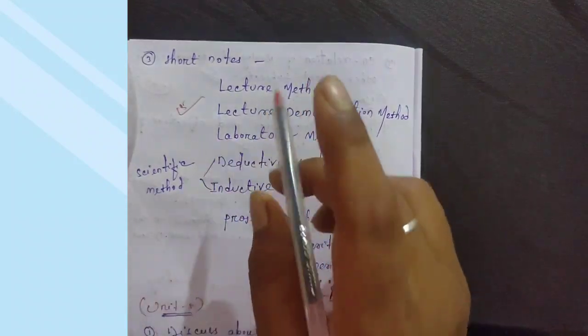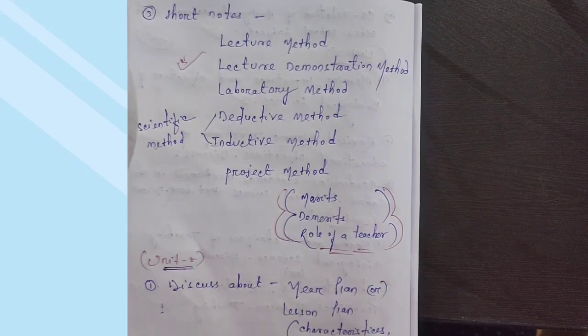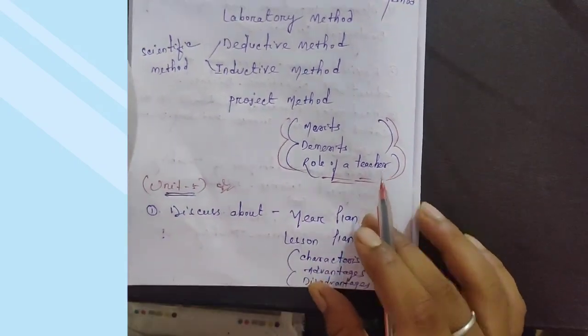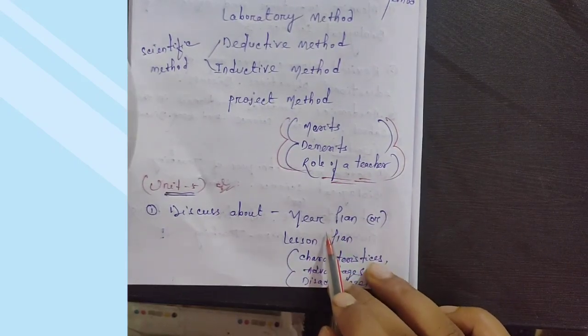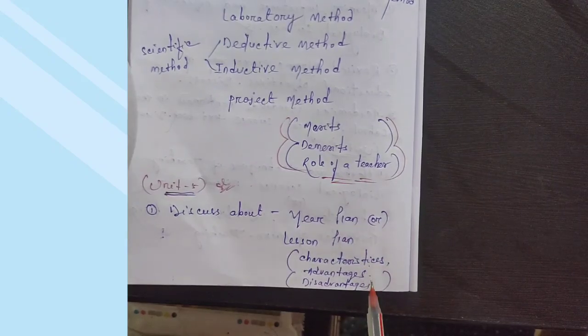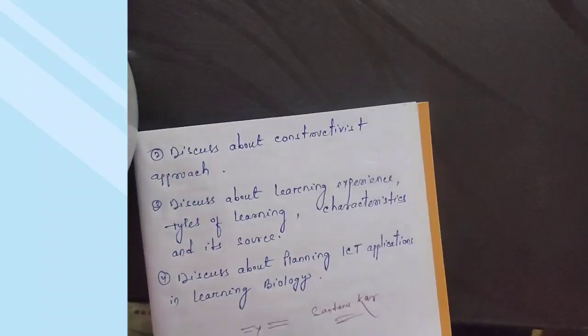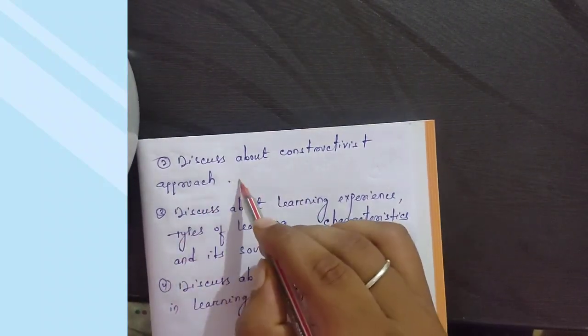Unit 5: Discuss different approaches - these are short notes. Year plan and lesson plan are important - focus on these. Long questions include characteristics with advantages and disadvantages. Discuss the constructivist approach - this is both a short note and potentially an important long question.